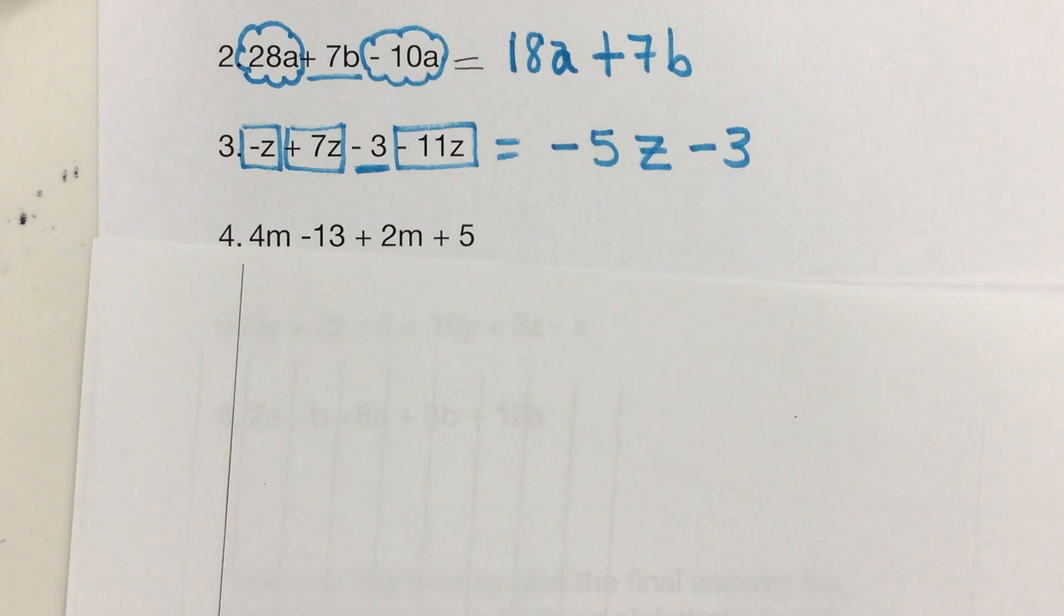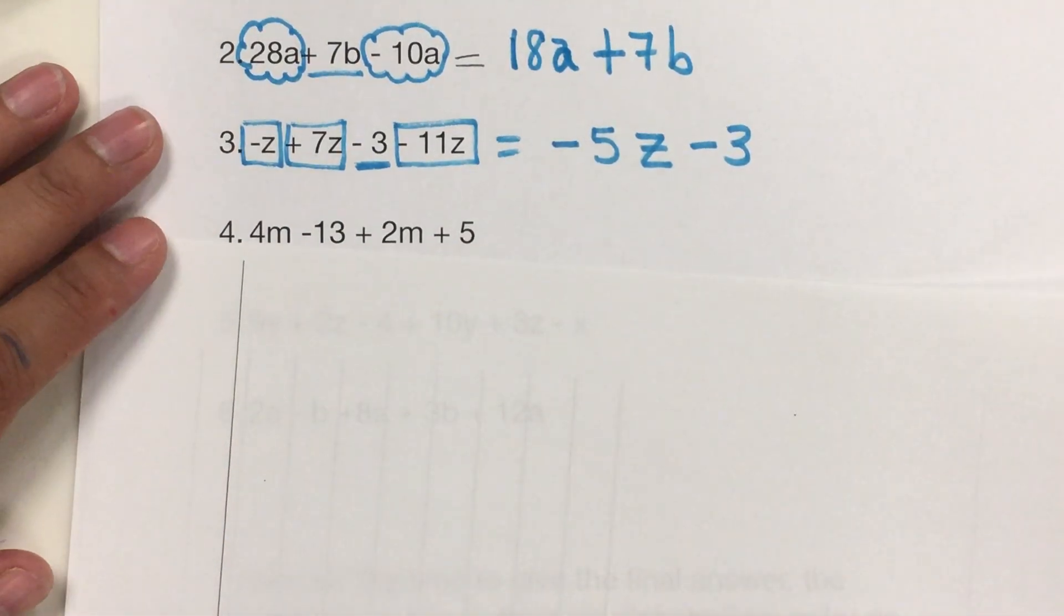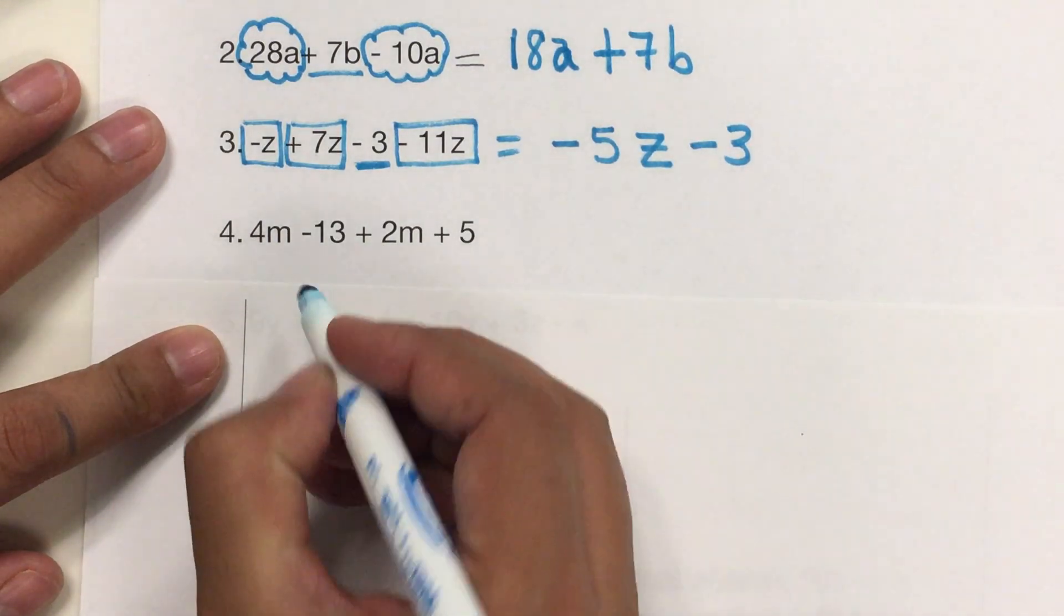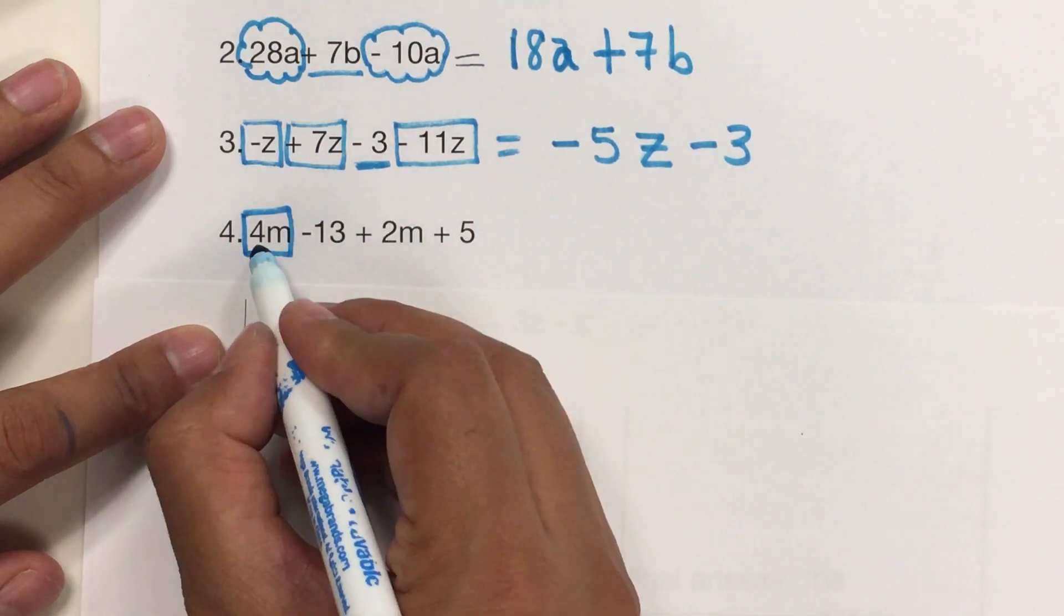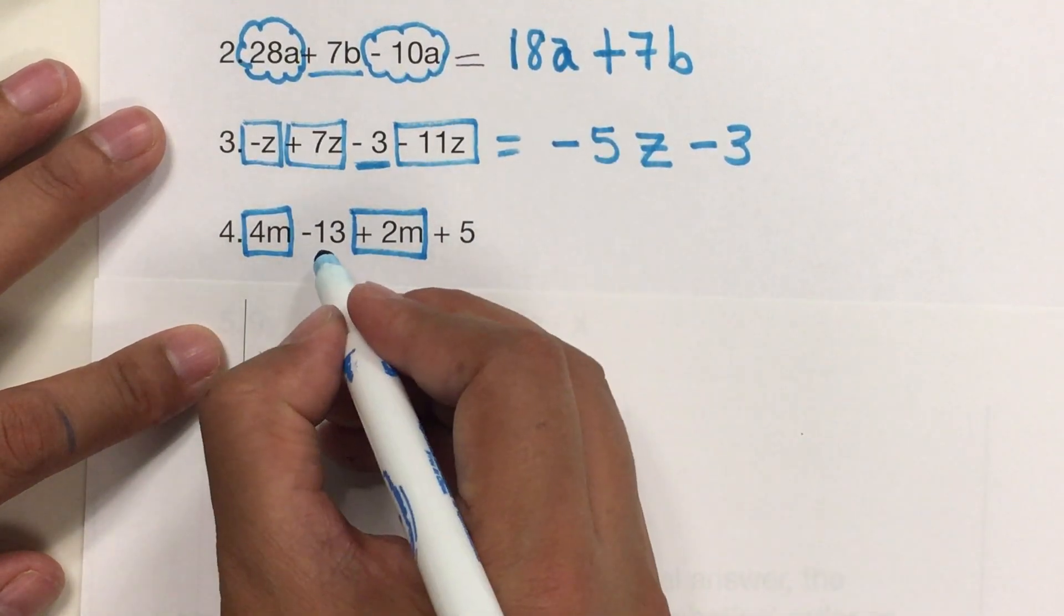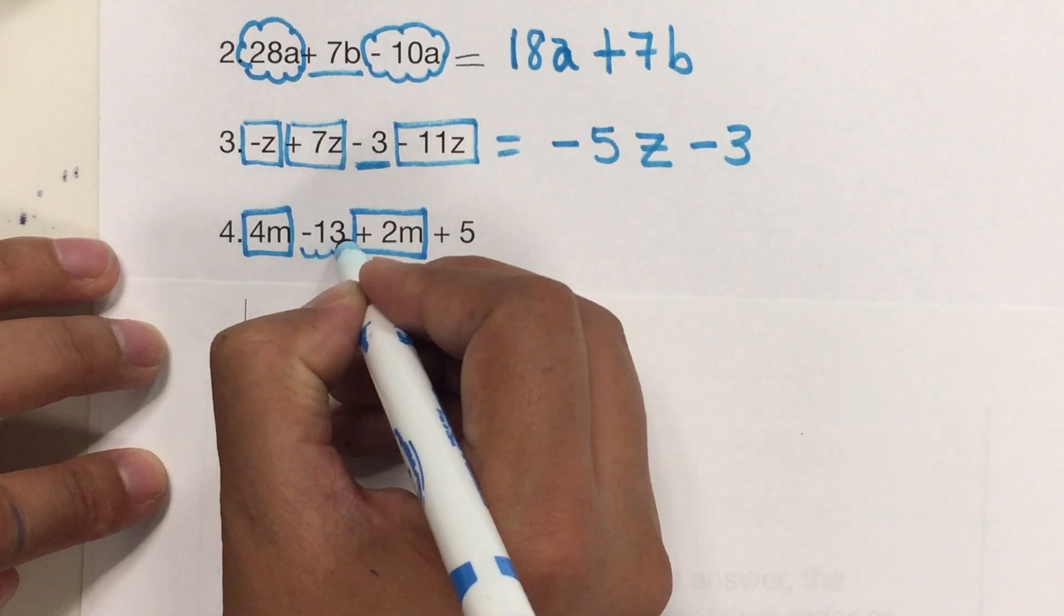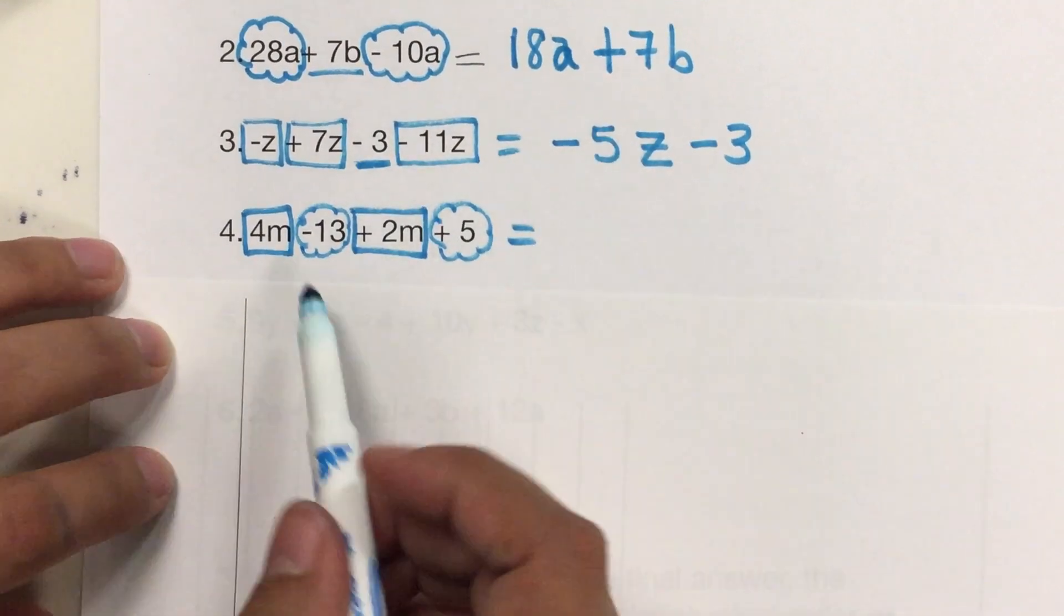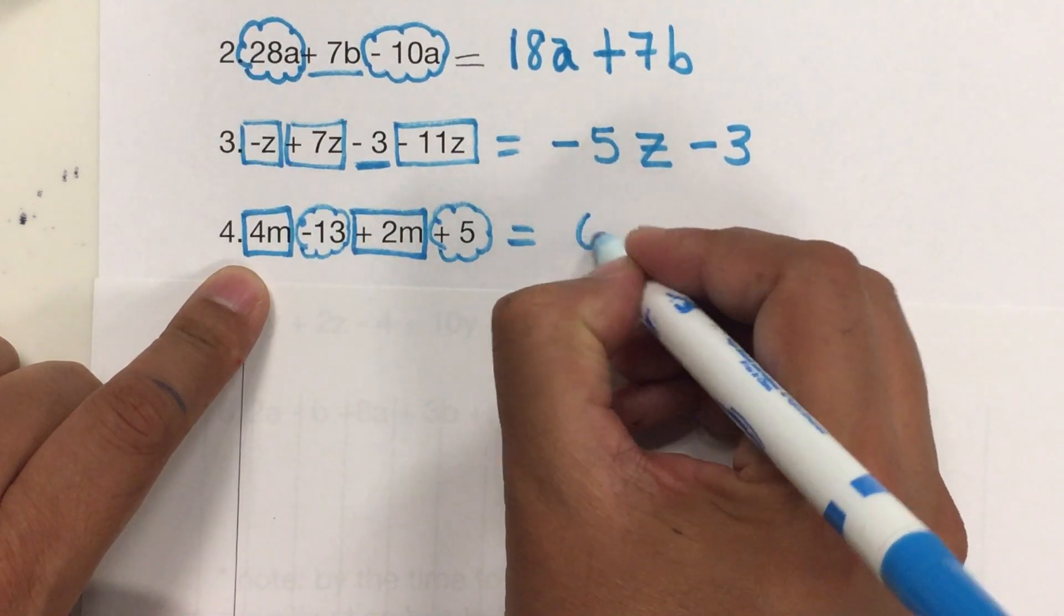Now let's do the next one. And here I have four terms, meaning a quadrinomial. And so, I look for the ones that are the same. So, I have 4m. I look for another m. It's right here. 2m. But then I have, this one doesn't have m. I'm going to use a different shape. And so, I say, okay.